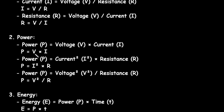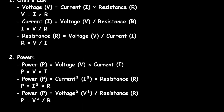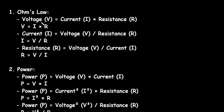Now we know that V is equal to I into R, as we can see here. So we can replace this V with I into R. Then we get power is equal to I squared R.